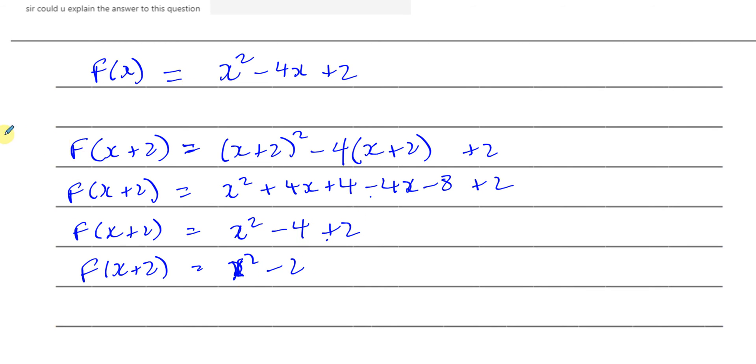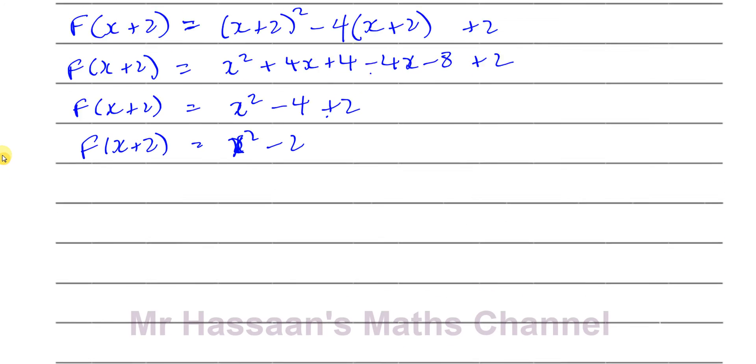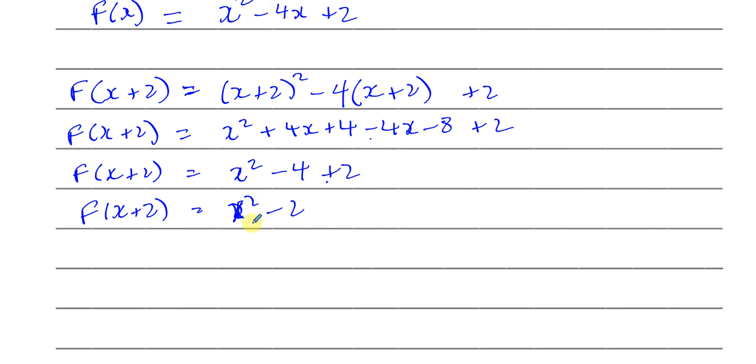Okay, x squared minus 2, which is what I was looking for. That's what I wanted to find. So I found an expression. When I put x plus 2 into it, I get x squared minus 2. So if you want to just make sure, we've got f(x) equals x squared minus 4x plus 2. Let's put f(x + 2) in there and see, just make sure.